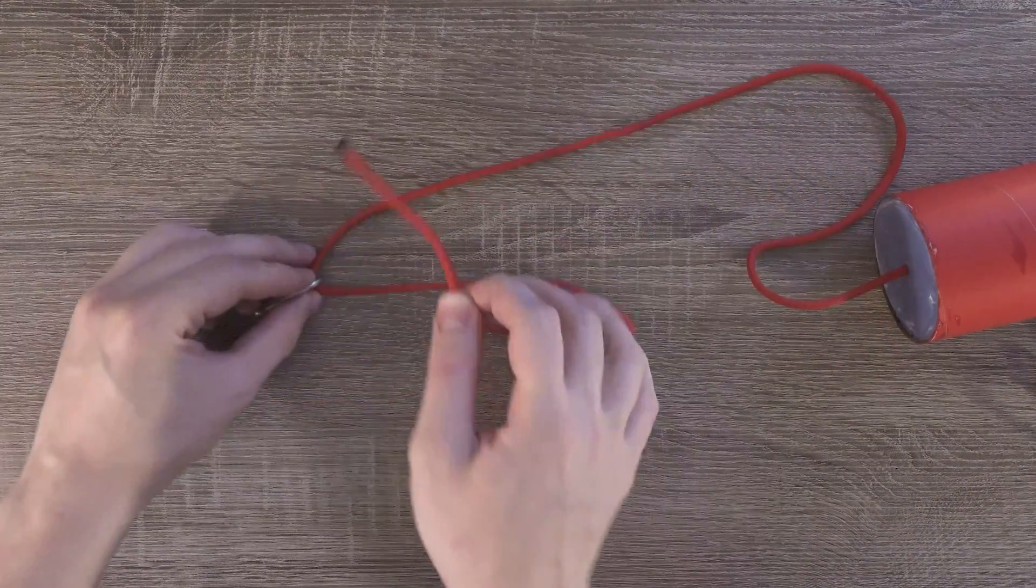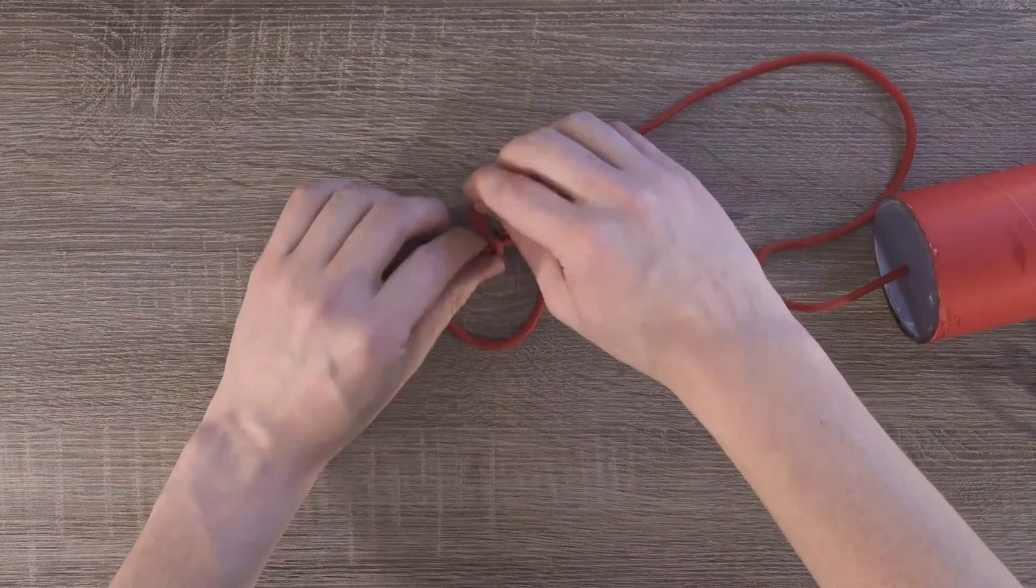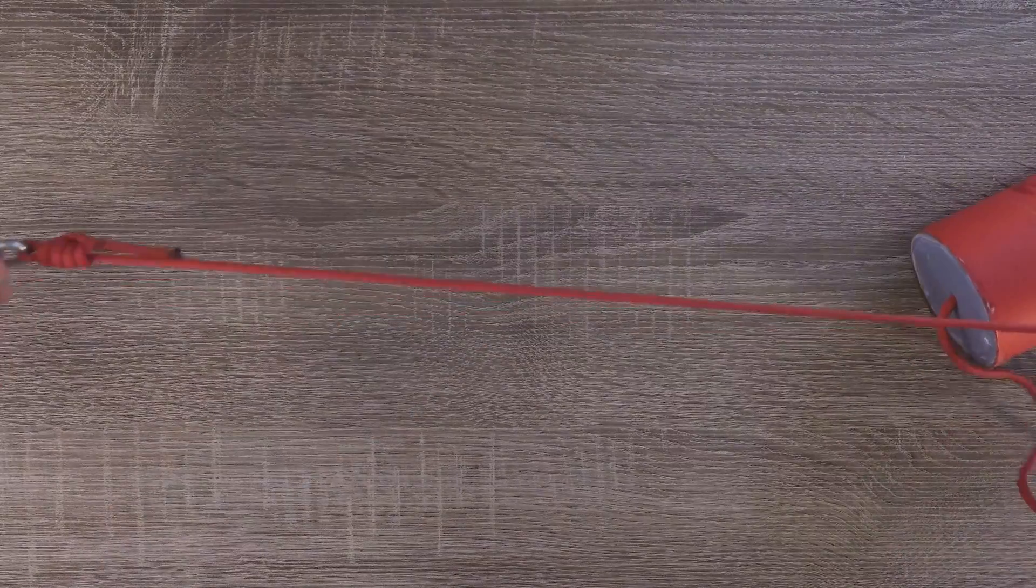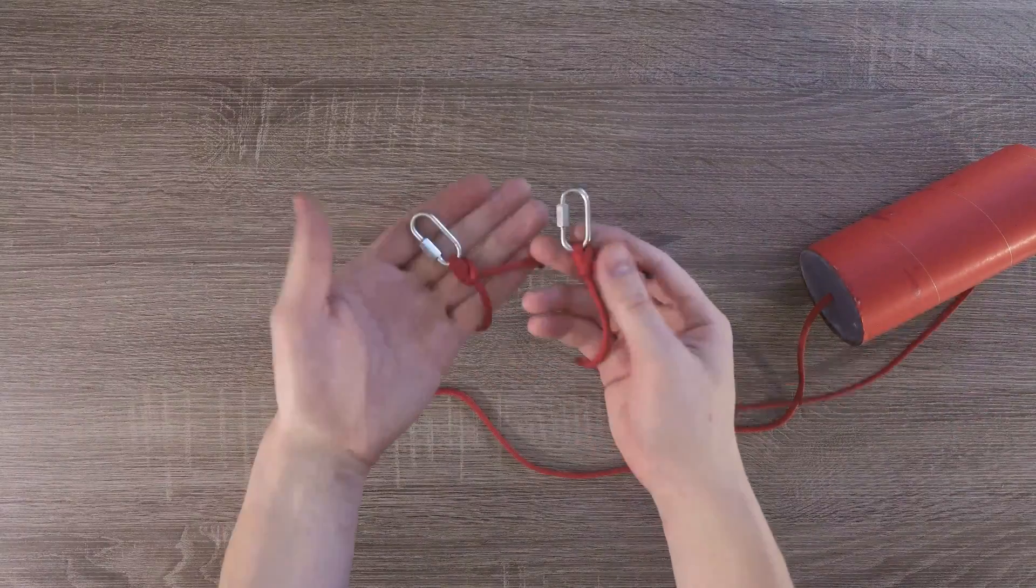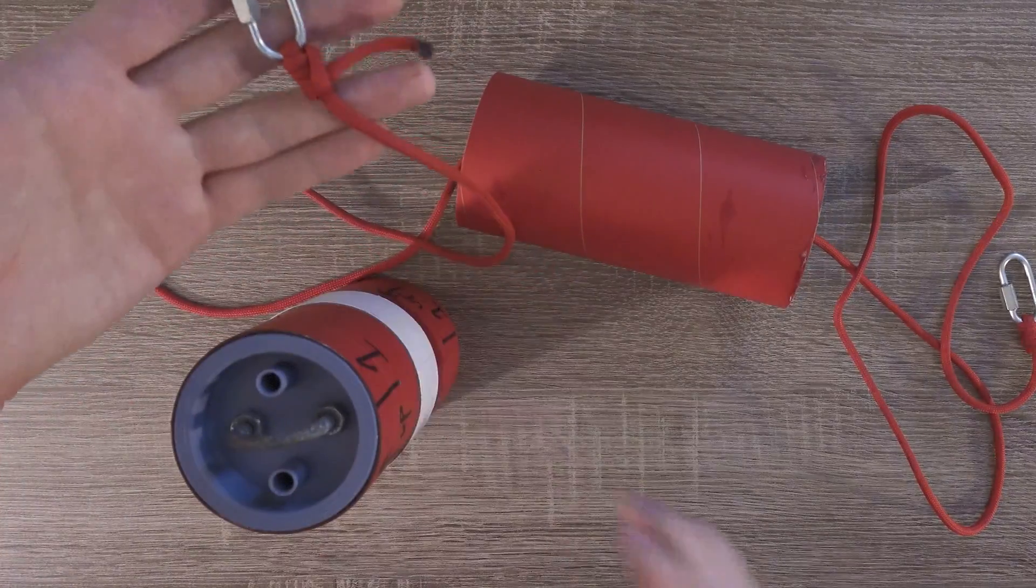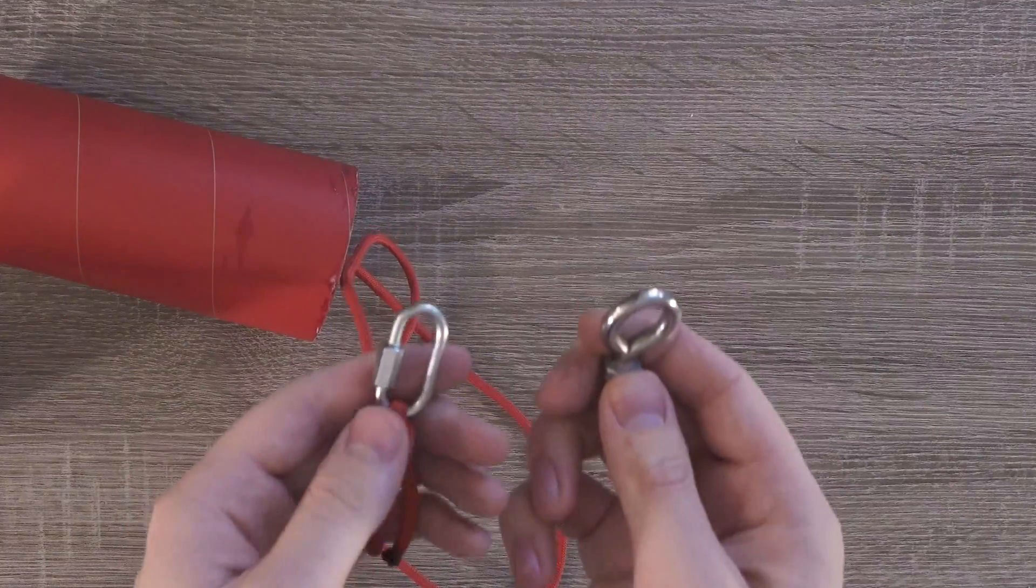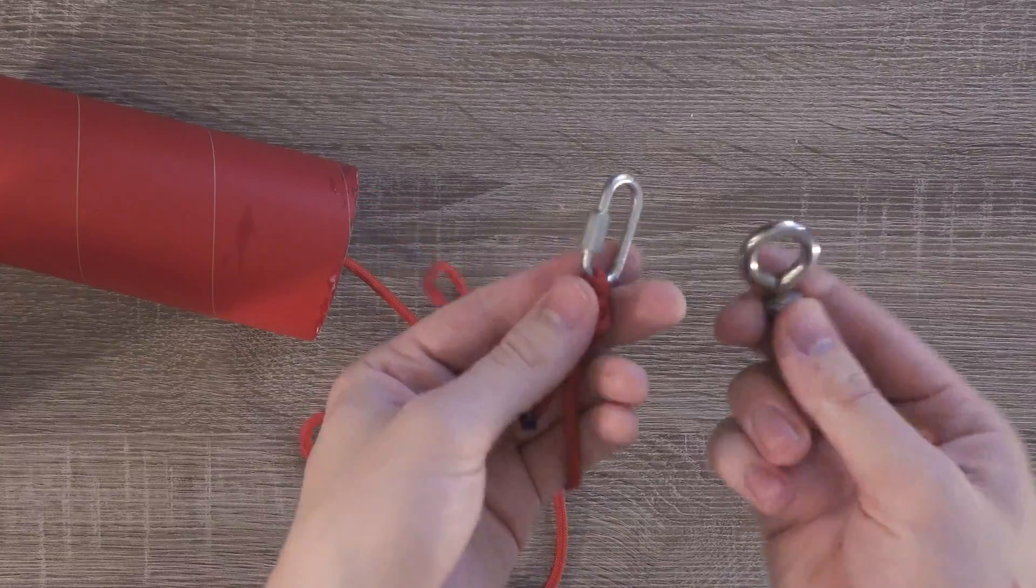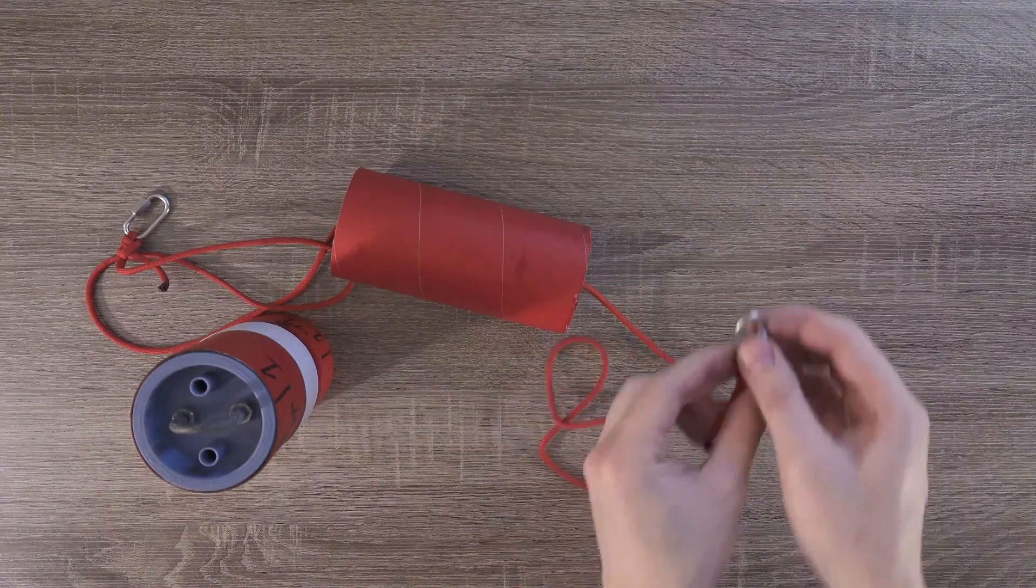Now we'll do the exact same on the top part of the shock cord. This is the part that's going to connect to the nose cone and the parachutes. You should now have quicklinks on either end of your shock cord. The bottom will connect to the body coupler, and the top will connect to an eye bolt, which will be part of the nose cone. We won't put the whole thing together yet, because that happens in the next video.